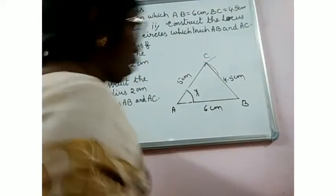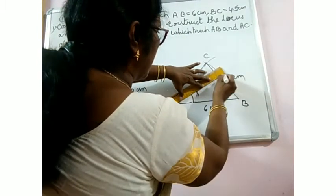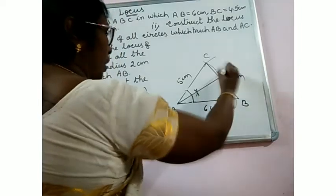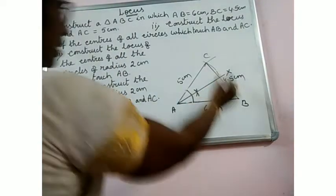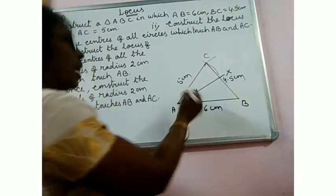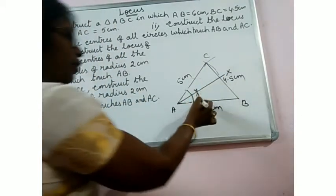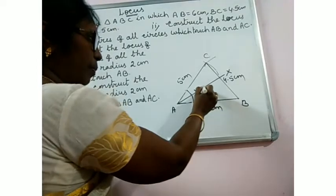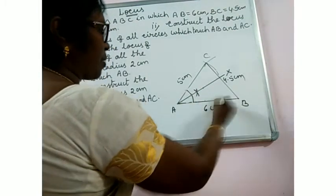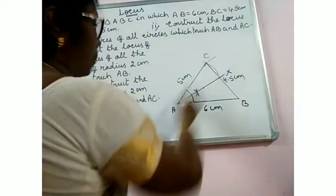So the locus of centers of all circles which touch AB and AC is the bisector of angle BAC. Let us bisect angle BAC: give one arc from here and one arc from here, then join A to the intersection point and produce. Let us name this AX. AX is the bisector of angle BAC and is the required locus. Every point on this bisector is at equal distance from AB and AC.